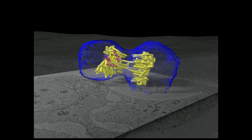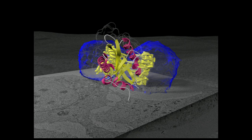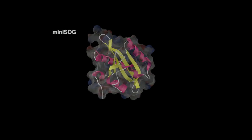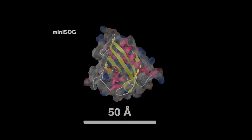Mini-SOG, or mini-singlet oxygen generator, is a small and newly engineered fluorescent marker that works both in light microscopy and electron microscopy.